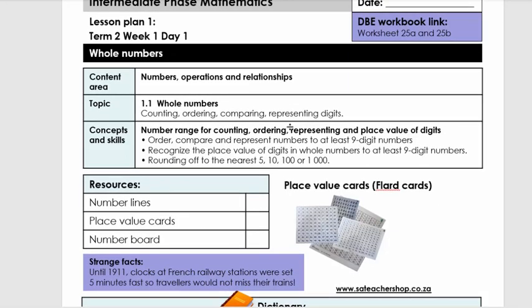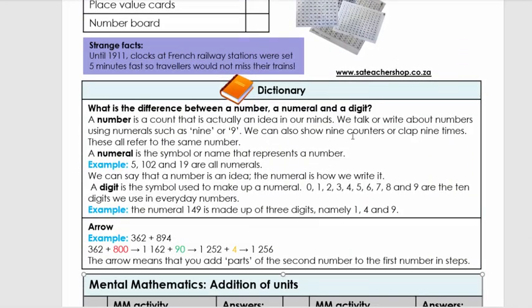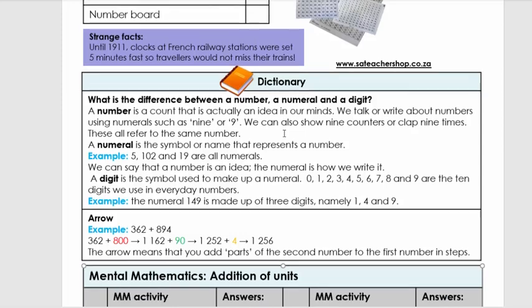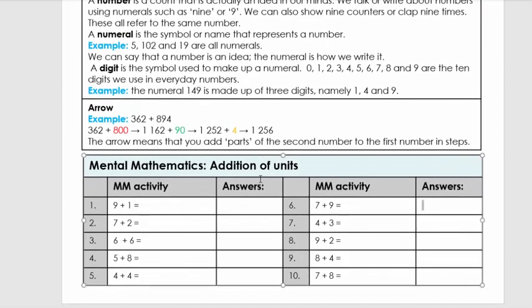The first bit is the CAP, so it links to what we need to do in the curriculum. It gives us the resources, then it gives you a dictionary. You can pause here anytime and go through these words - they're just words we might use in the lesson and you need clarification on. We also provide some examples to make it easier. Then we're going to do the mental maths activity - you've got 10 questions, you can write them on paper or answer them orally. Pause, do it quickly, and then we will carry on with the lesson.